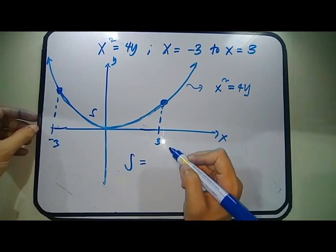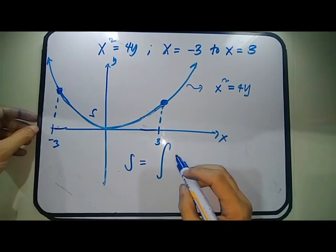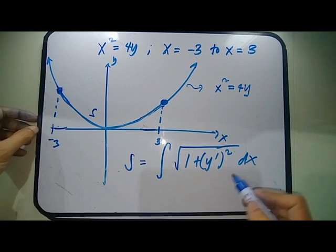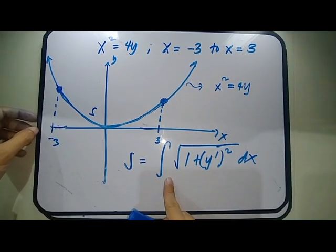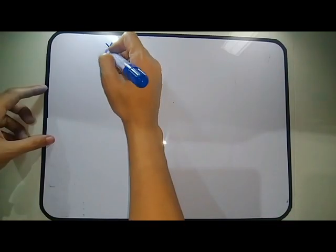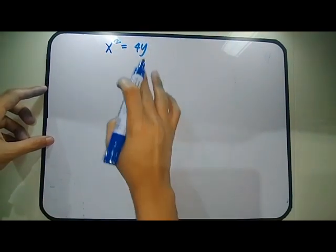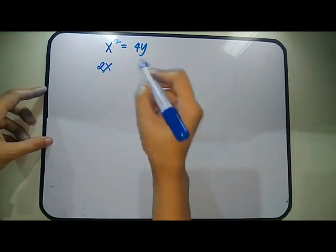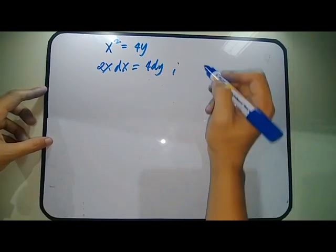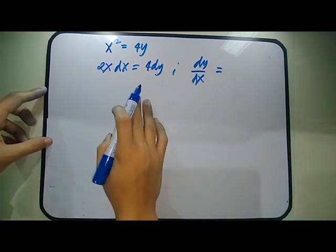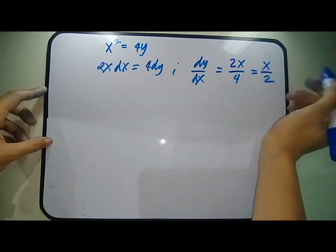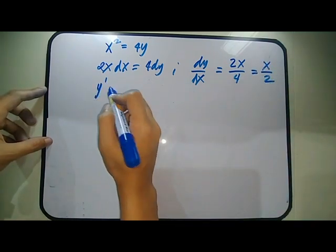Applying the formula: S = ∫√(1 + Y′²) dX from X1 = −3 to X2 = 3. We need to find Y′ from X² = 4Y. Differentiating both sides: 2X dX = 4 dY, so dY/dX = 2X/4, meaning Y′ = X/2. We now have all the elements to solve directly.